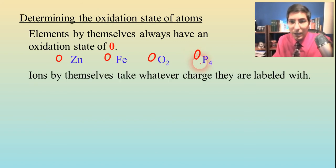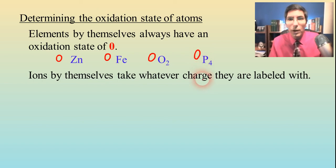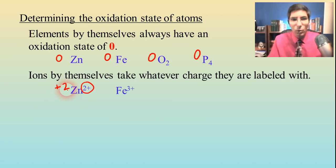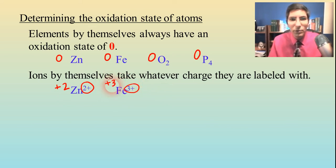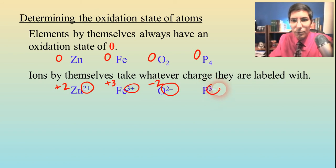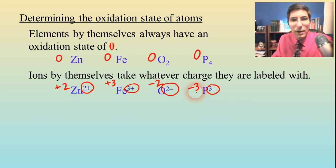Now, if you ever see an ion, ions that are by themselves take whatever charge they happen to be labeled with. So for example, if we have zinc ions here, you see a plus two there — that's a dead giveaway that it's a positive two. Or iron three-plus — that plus three right there tells us it's a positive three. Oxide: if you see a negative two, well, it's got a negative two charge. And phosphide: you see a negative three, that means it's got a negative three charge. So ions are usually pretty easy to figure out as well.